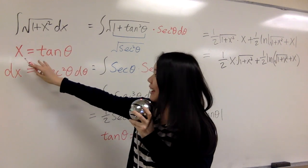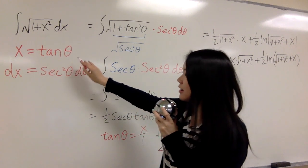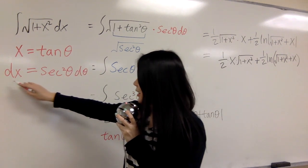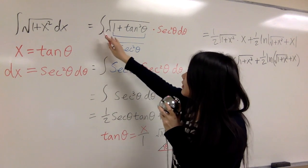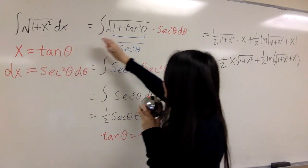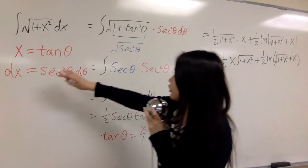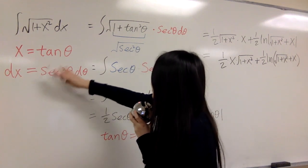First, you set x equals tangent theta and do the derivative: dx equals secant squared theta d theta. And you put tangent theta inside and change your dx to this one.